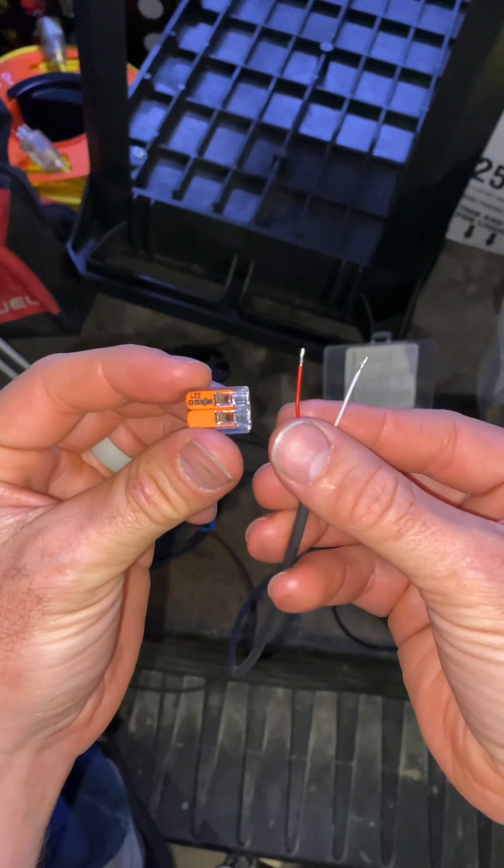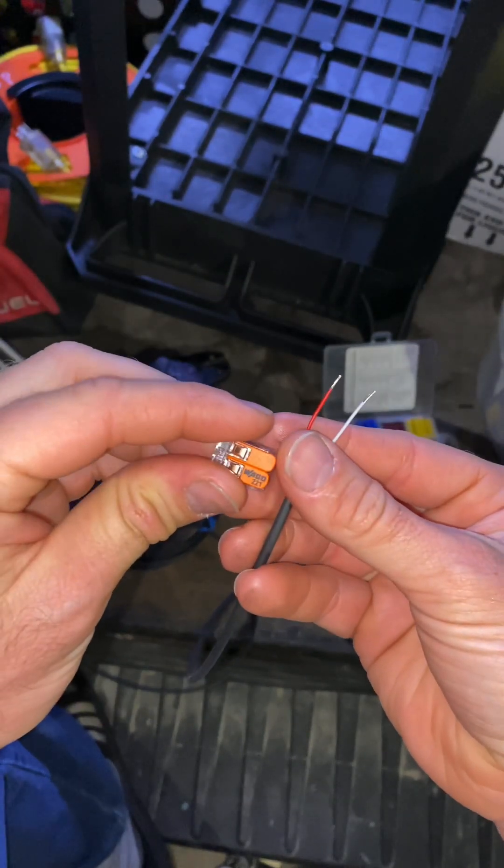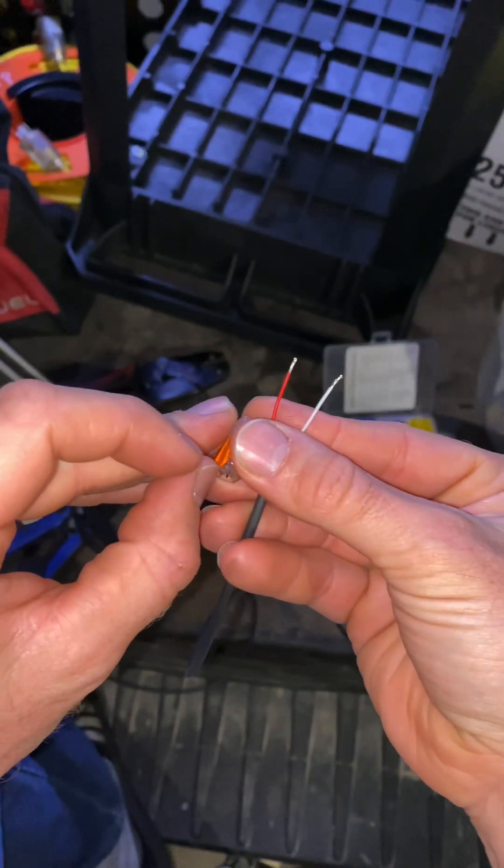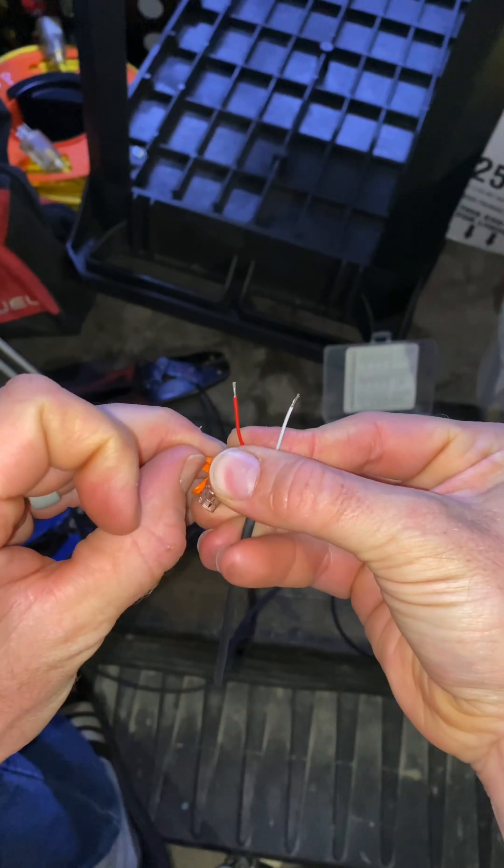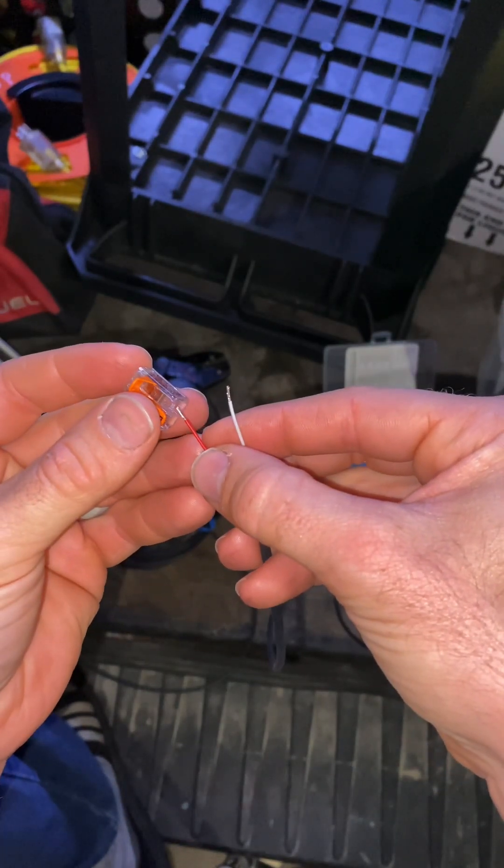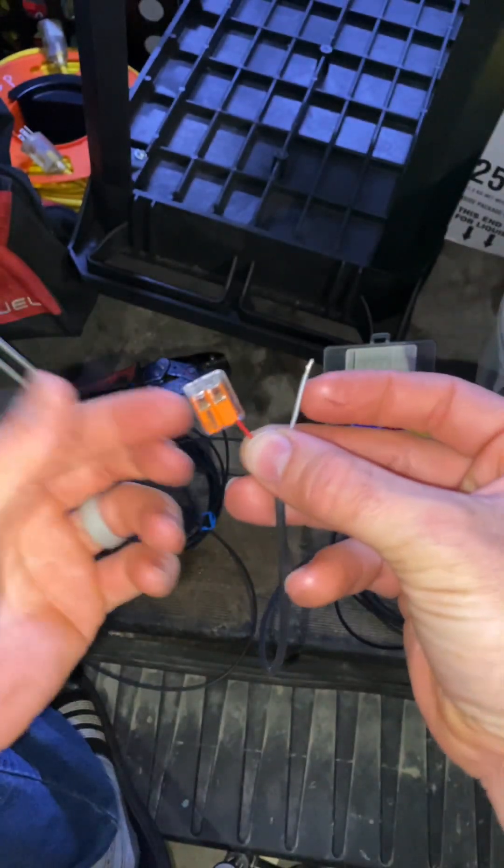Number one is definitely using WAGOs. I can't highly recommend these enough. Once you get wire strips like this, all you need to do is pull the tab, stick the wire in there, spring shut, and that's literally it. You don't need to use any tool.